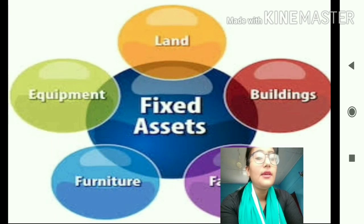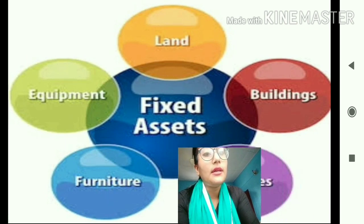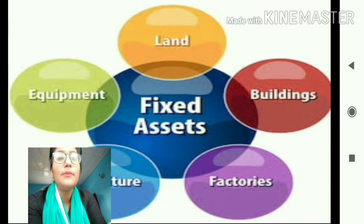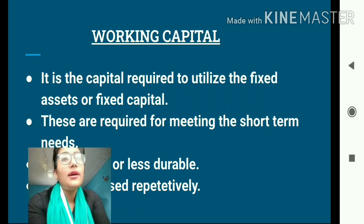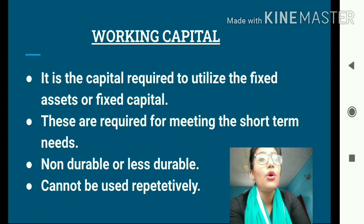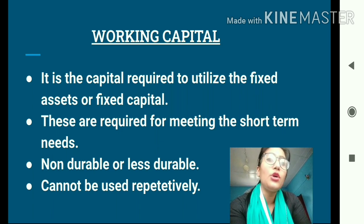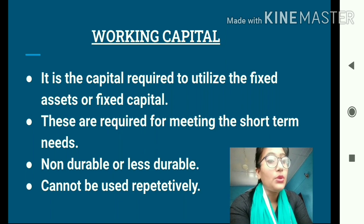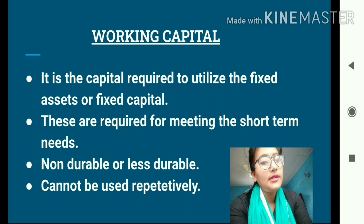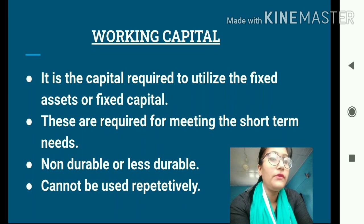The various fixed assets include machines, land, buildings, furniture, factories, and plants — all required in a production activity. The money invested in these fixed assets is fixed capital. Working capital, on the other hand, is the capital required to utilize the fixed assets. Without working capital, the fixed assets cannot be used. For example, in farming, buying a tractor alone is not enough.